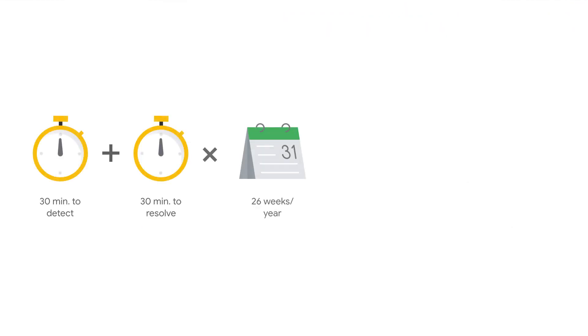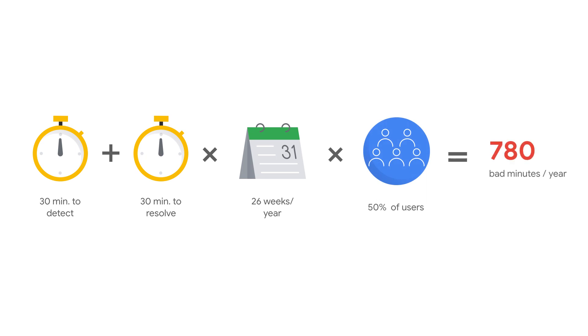So that is probably not very good, right? Yeah, so if I were to put this into the same framework, I'd say that this is a 60-minute outage — 30 minutes to detect and 30 minutes to resolve — times 26 times per year, affecting about half of your user base. And that's 780 bad minutes per year. So this outage would wind up being about half as bad as the database backup downtime.